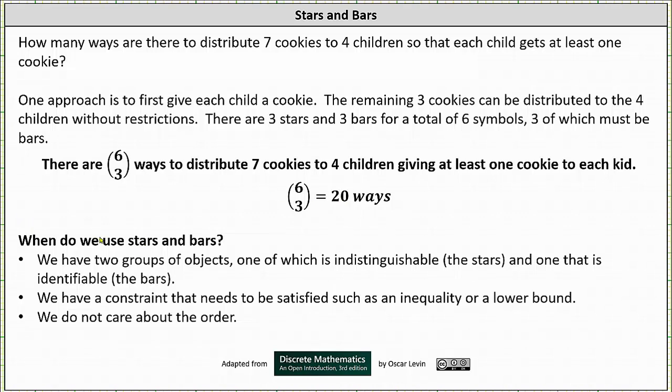So you might be asking when do we use stars and bars? Here are some guidelines. We have two groups of objects, one of which is indistinguishable, the stars, and one that is identifiable, the bars. So in our case we have seven indistinguishable cookies, which is why we have seven stars, and we have four identifiable children, which gives us three bars.